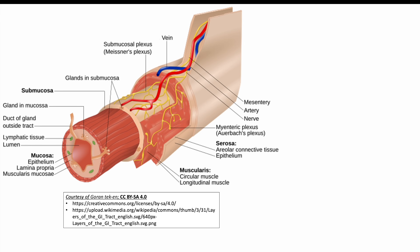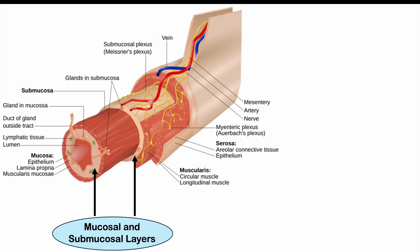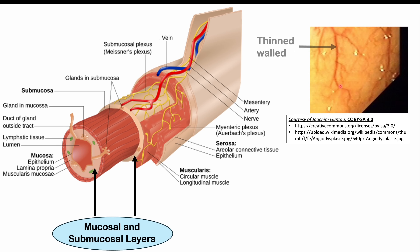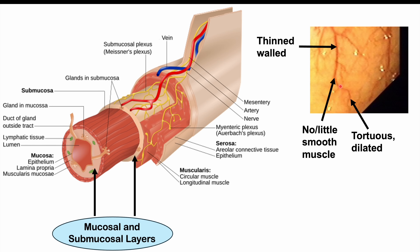Regarding pathophysiology, these vascular abnormalities occur in the mucosal and submucosal layers of the GI tract. They are thin-walled and weak, prone to bleeding, and have little or no smooth muscle — unlike normal blood vessels that can contract. They can also be tortuous and dilated, which further contributes to their weakness and bleeding risk.